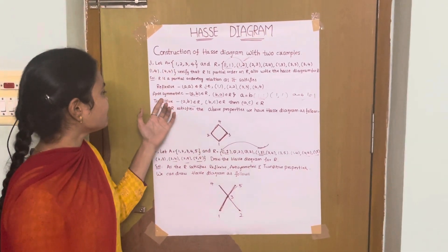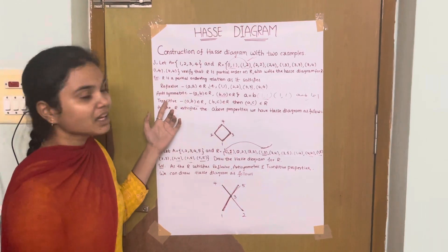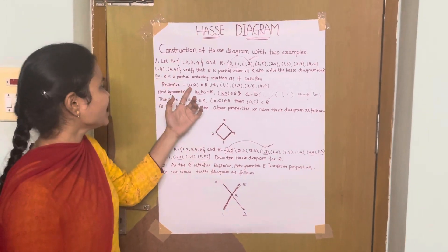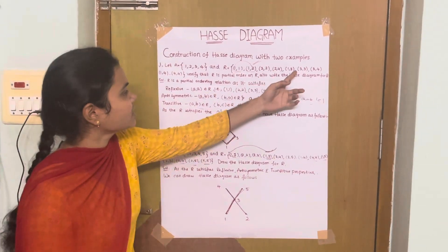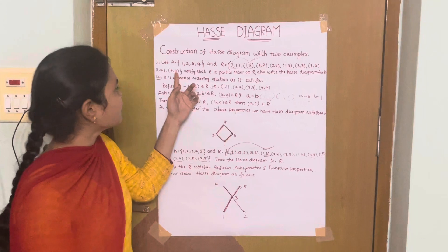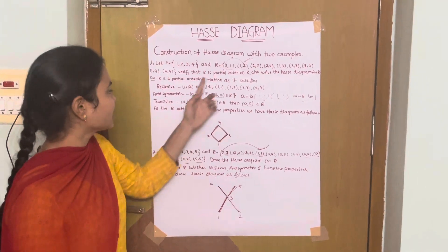The properties are: reflexive, antisymmetric, and transitive. Reflexive means (A, A) belongs to R. That is (1,1), (2,2), (3,3), and (4,4) all belong to R.